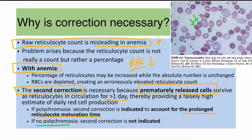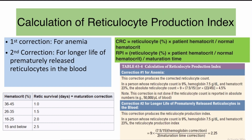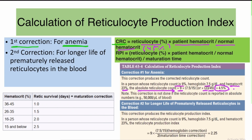If there is no polychromasia, the second correction is not indicated. The first correction for anemia uses this formula: corrected reticulocyte count = reticulocyte percentage × (patient's hematocrit ÷ normal hematocrit of 45%). For example, if a patient has a reticulocyte count of 9% and a hematocrit of 23%, the corrected reticulocyte count = 9 × (23 ÷ 45) = 4.5%. This corrects the reticulocyte count for the degree of anemia.